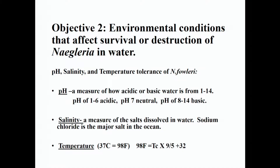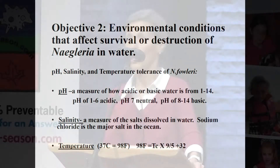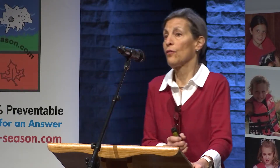Our second objective, which we're now concentrating on, is environmental studies. We want to know which environmental conditions affect the survival or destruction of Naegleria in fresh water. We're looking at pH, salinity, and temperature tolerance. pH measures how acidic or basic water is, from 1 to 14 — pH 1 to 6 is acidic, 7 is neutral, 8 to 14 is basic. Salinity is the measure of salts dissolved in water, with sodium chloride being the major salt in the ocean.